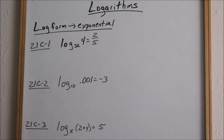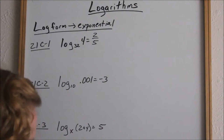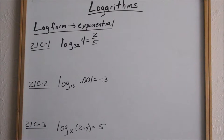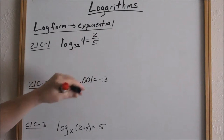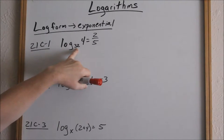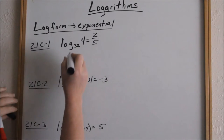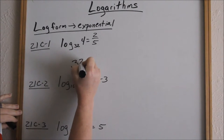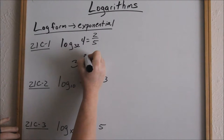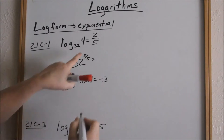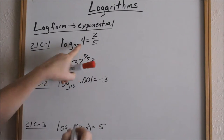Log base 32. In our calculators, when you see the log button, it's always base 10 because our numbers are a base-10 system. So the fact that we're calling this a base — to write this into exponential form, this is the base. That number is your base, this becomes your exponent, and this becomes your answer.